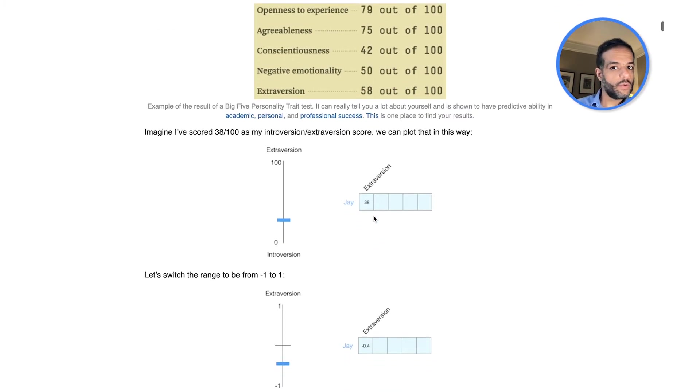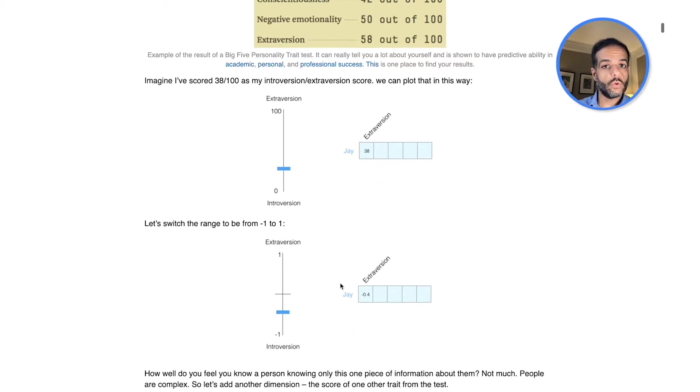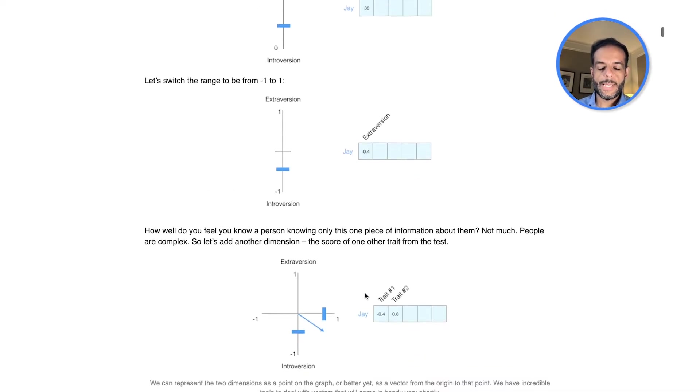And if we only take one of them, extroversion, and we plot it, and we change the score from zero to one, to minus one, to positive one. So that's one dimension of your personality, literally. But it doesn't really describe you.